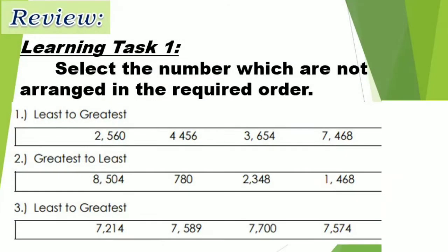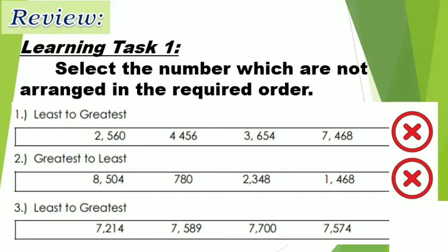Observe the numbers given in number 1. Is it arranged from least to greatest? No, it's not. How about number 2? Is it arranged from greatest to least? The numbers are jumbled — it is not arranged from greatest to least. How about number 3? Is it arranged from least to greatest? No, it's not. Therefore, all the given numbers in 1, 2, and 3 are not arranged in the required order.